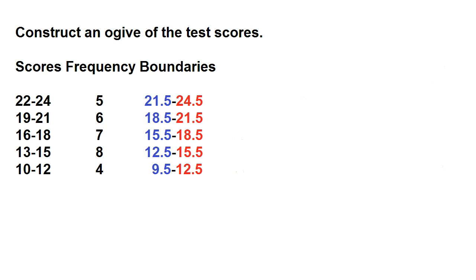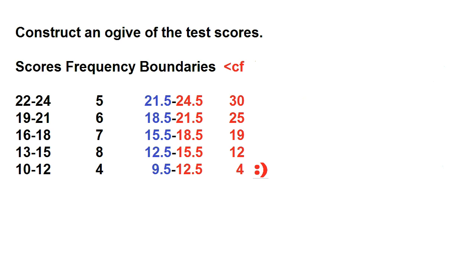Now that we have our class boundaries, let's find the less than cumulative frequency. To find it, copy the frequency of the lowest class interval, then add the frequency of the next upper class interval. The frequency of the lowest class interval is 4. So 4 plus 8 is 12, 12 plus 7 is 19, 19 plus 6 is 25, and 25 plus 5 is 30.